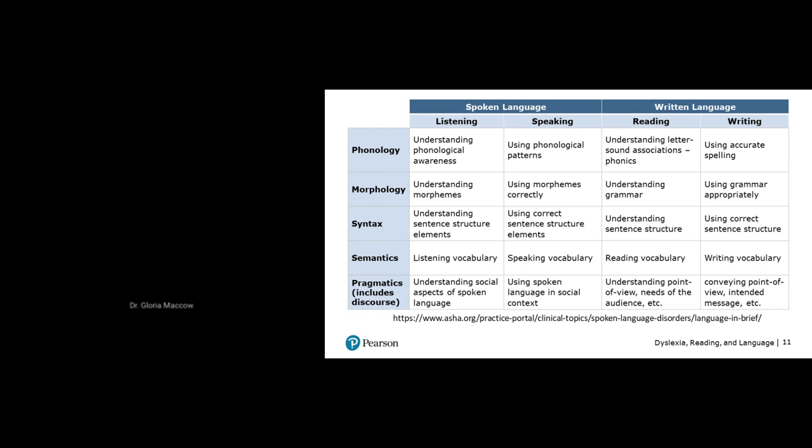Looking at spoken language as focused on receptive listening and expressive speaking, and written language on receptive reading and expressive writing, we want to think about how the different components of language impact both modalities. From this graphic from ASHA's 'Language in Brief,' whether thinking about spoken or written language, there are five language domains: phonology, morphology, syntax, semantics, and pragmatics. They all work together when we are listening, speaking, reading, and writing.